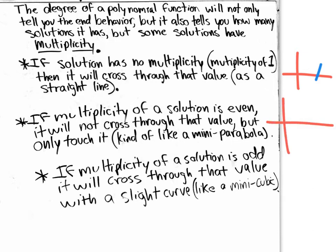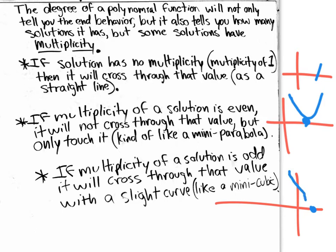If the multiplicity is even — like two, four, or six — it goes down, touches the x-intercept, and comes back up like a mini parabola. If the multiplicity of a solution is odd, it will cross through that value with a slight curve, like a mini cubic function — a snake-like curve right through it. We'll see examples of that in a couple of minutes.